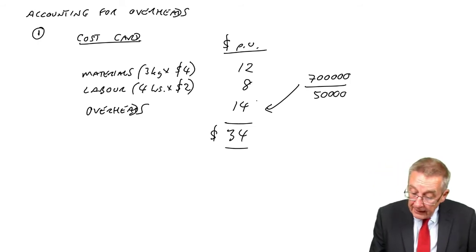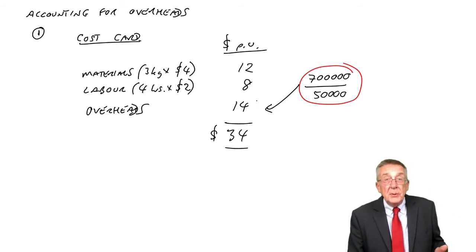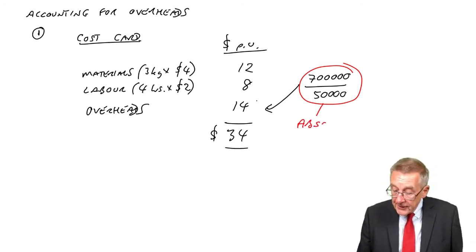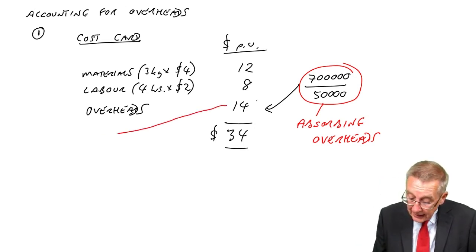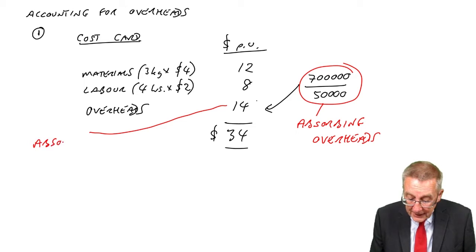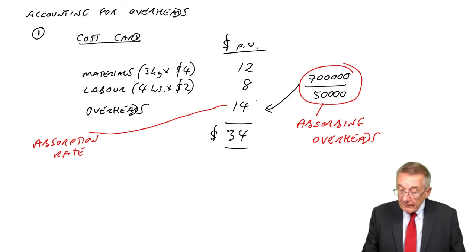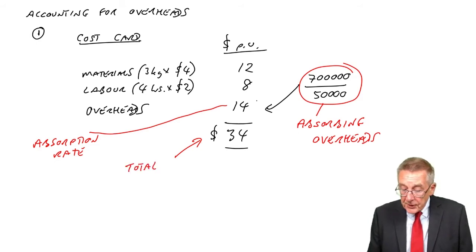A little bit of terminology. That exercise we did to get the overheads per unit, you can't measure it in each unit, each desk. We did that dividing. We say we're absorbing the overheads. This $14 we've got, we call the absorption rate. And the $34, it is the total cost. It's actually what we call the total absorption cost.